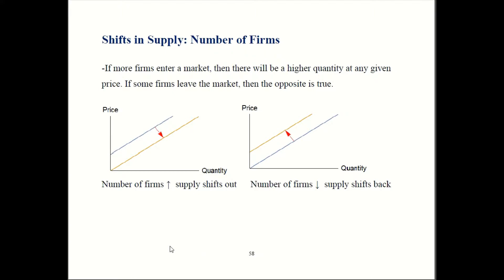So when more firms enter, now there's going to be more supply. So the firms that were previously not in the market were not producing anything, but now they're making something. So overall supply is bigger than it was before. That causes supply to shift out.